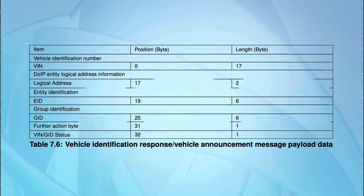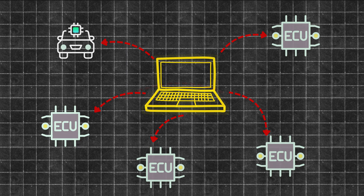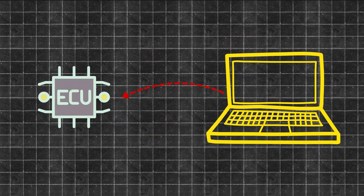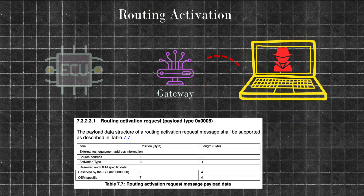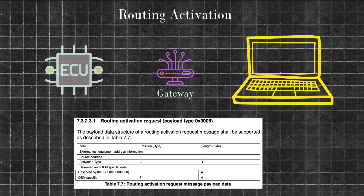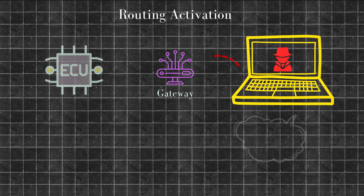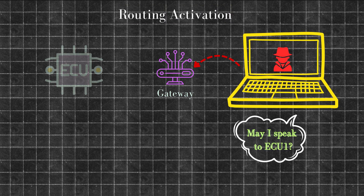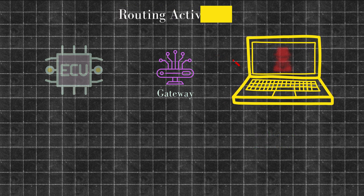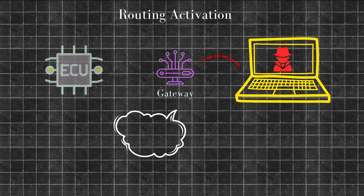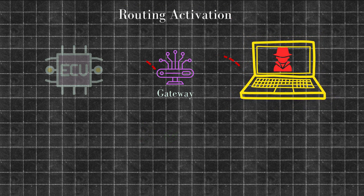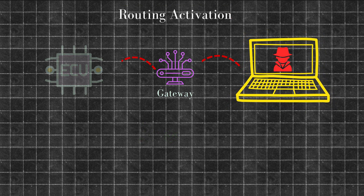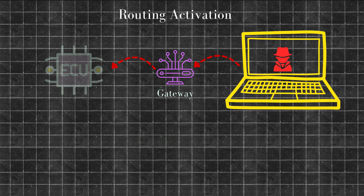Now that the tool knows who's on the network, it doesn't just start interrogating the ECU like an overzealous detective. Instead, it performs routing activation — like asking the gatekeeper: 'May I speak to ECU one?' The gateway ECU checks the credentials, and if approved, it activates the route and opens the door metaphorically for communication.